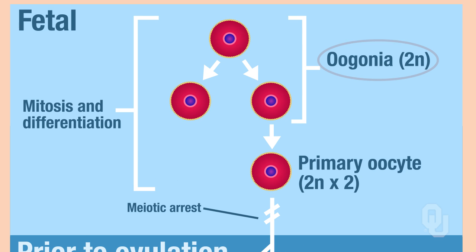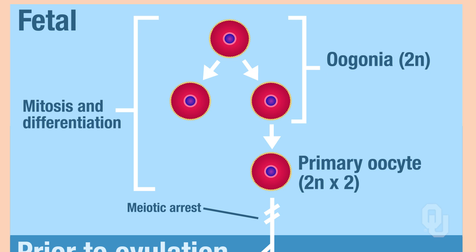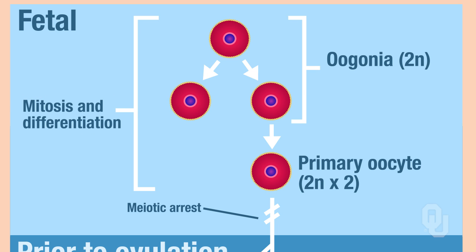Starting with oogenesis in fetal development: the oogonium is diploid — it's 2N — and this is considered the germ cell in the female reproductive tract. The oogonium undergoes mitosis during fetal development, and the number of these is fixed. Once the oogonium undergoes mitosis, then some of these will actually begin meiosis.